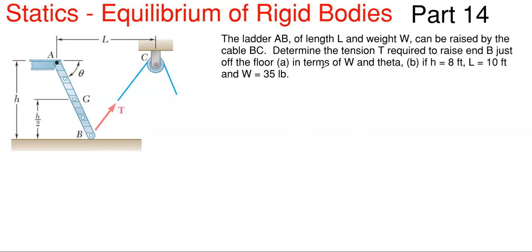So we have two parts here. One part we're going to do in variable format and the other we're actually going to find a real answer. We have this picture going on here, and really the only thing that is not labeled is that we have W for our weight acting at G and the length from A to B is L.